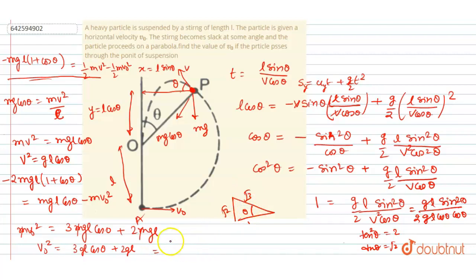Putting in the values, you get v naught equals root of (2gl + 2gl), and this is your final answer.